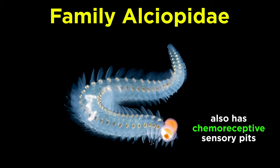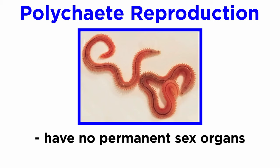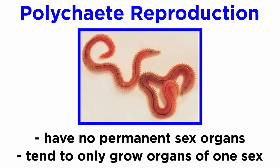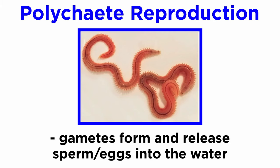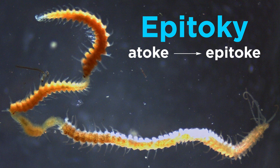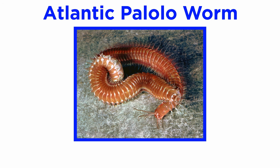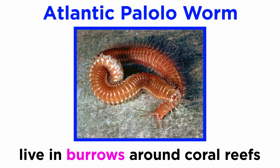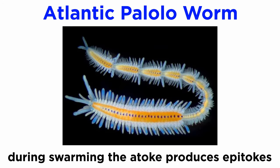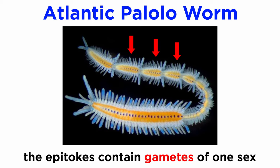Most species also have chemoreceptive sensory pits which act as a sense of smell. Most errant polychaetes have no permanent sex organs, though each individual will often only grow the sex organs of a single sex. Typically, gametes form as temporary swellings that simply release sperm or eggs into the water column. Some species have a unique form of reproduction that involves the creation of a completely new reproductive individual known as an epitoke. Polychaetes capable of epitoky live most of the year as sexually immature animals known as atokes. Each atoke will only create epitokes of one sex.